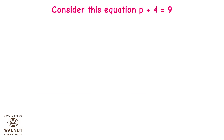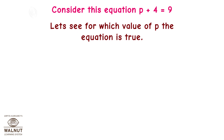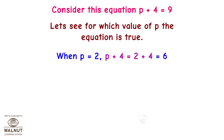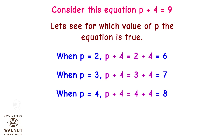Consider this equation: p plus 4 is equal to 9. Let's see for which value of p the equation is true. When p equals 2, p plus 4 equals 6. When p equals 3, p plus 4 equals 7. When p equals 4, p plus 4 equals 8. When p equals 5, p plus 4 equals 9.